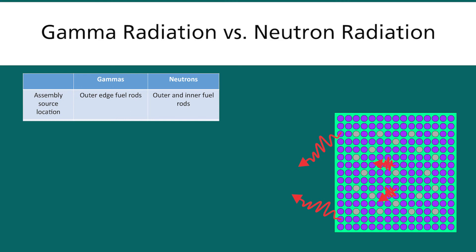Neutrons, however, travel much farther through the fuel assembly than the gamma rays. They are attenuated much less. So you will see neutrons that come from central fuel rods all the way to the outside of the fuel assembly.